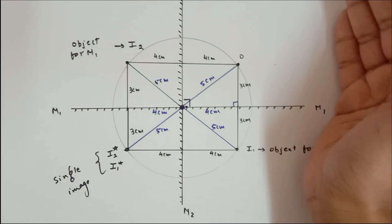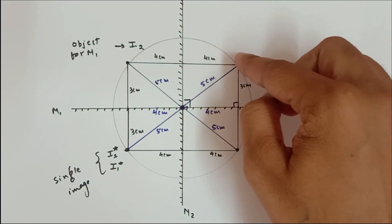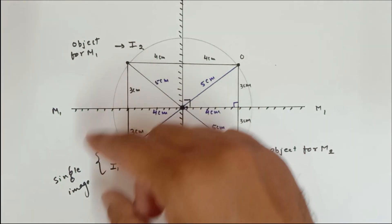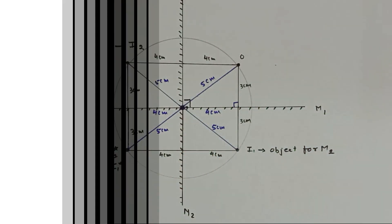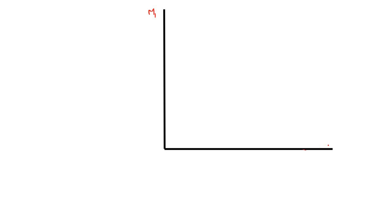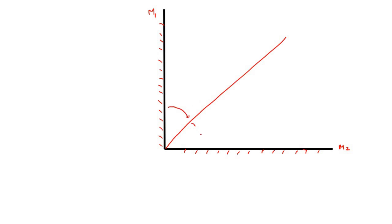In the next part of the video we are going to understand the ray diagrams and how these images are actually formed. Here we are looking at two perpendicular mirrors M1 and M2 — these are the non-reflective parts of the mirror. I am going to draw an angle bisector, which divides the whole 90-degree angle into two parts: 45 degrees and 45 degrees.